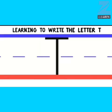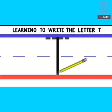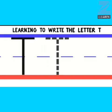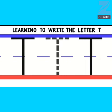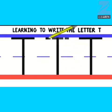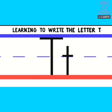Now children, let's trace the letter T. What you have to do is make a standing line to the bottom and then make a sleeping line. Let's do it together one more time: a standing line to the bottom and a sleeping line to make letter T. Well done.